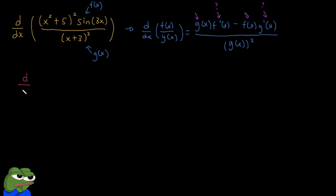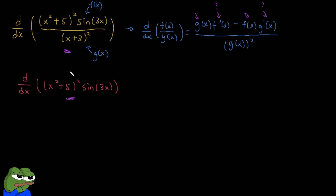The derivative of our numerator is the derivative of (x² + 5)² multiplied by sin(3x). We notice that this is made up of two functions being multiplied by each other, so we have to apply a product rule — a product rule here within a quotient rule — which gets quite confusing. But as long as you break it down, you should be okay. So let's apply product rule for this derivative.